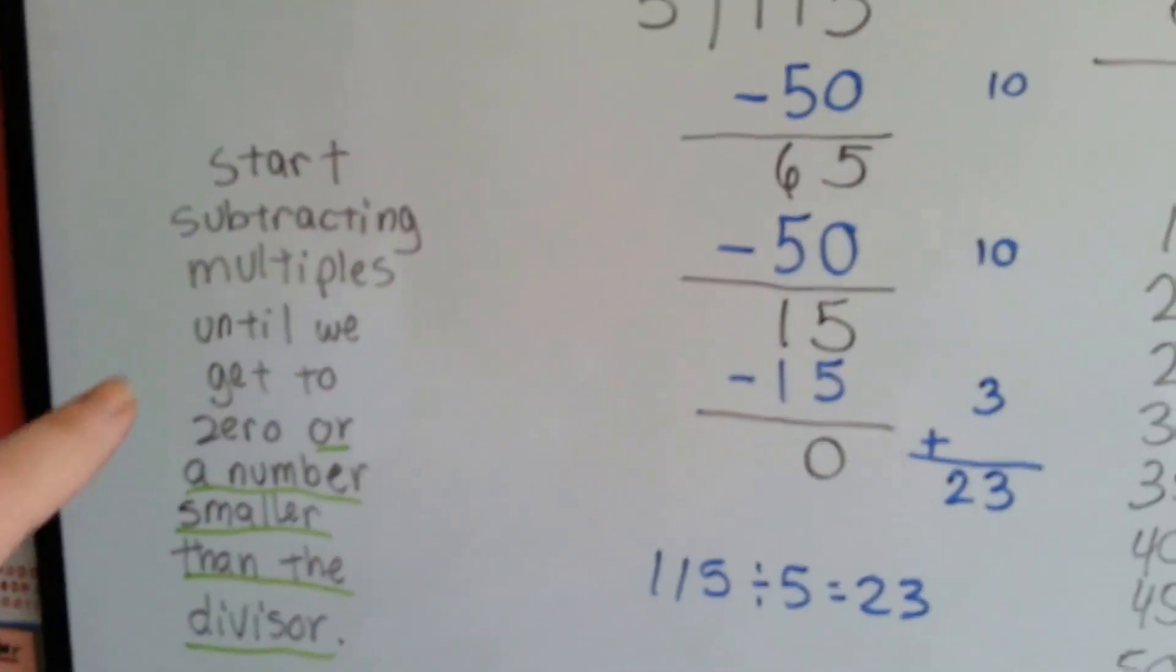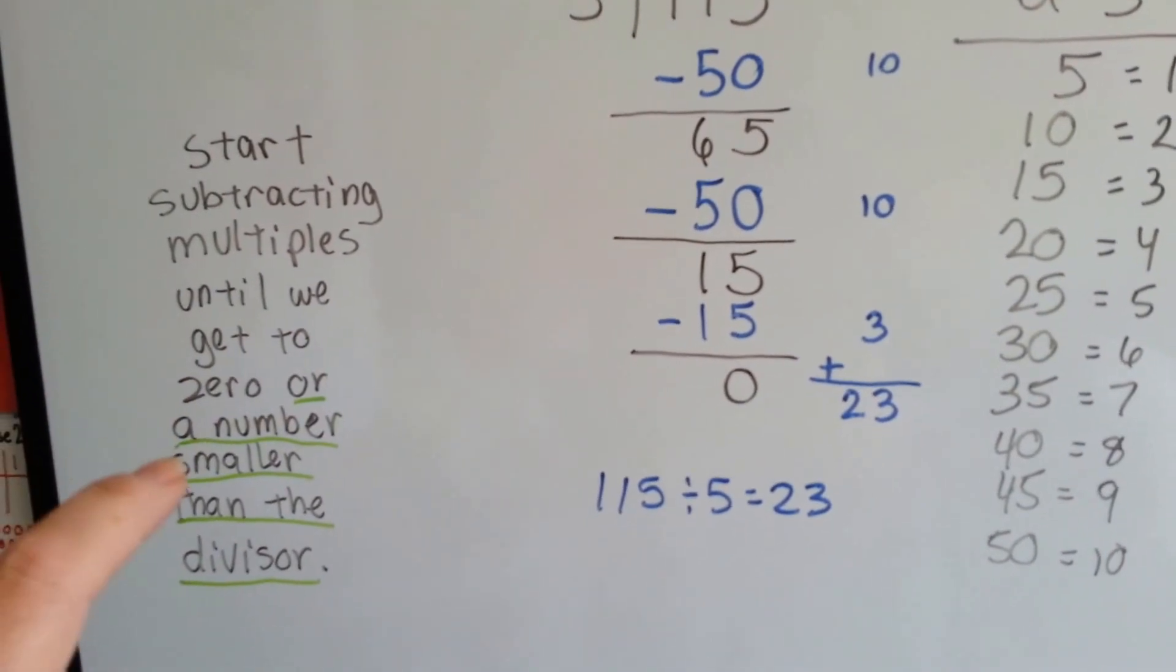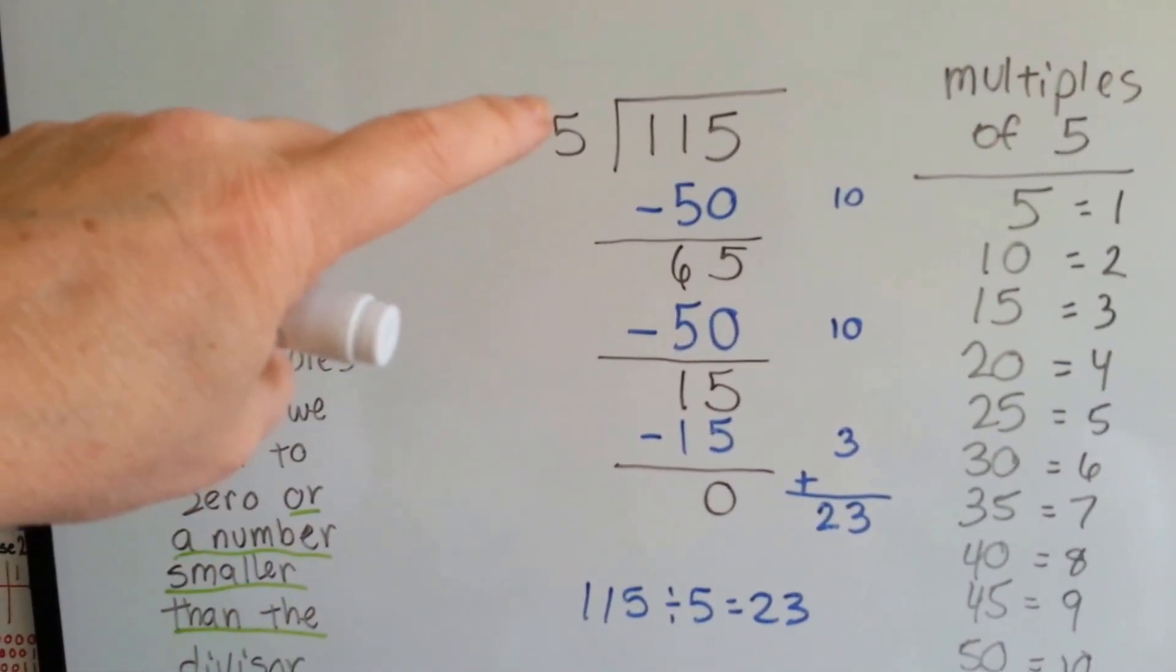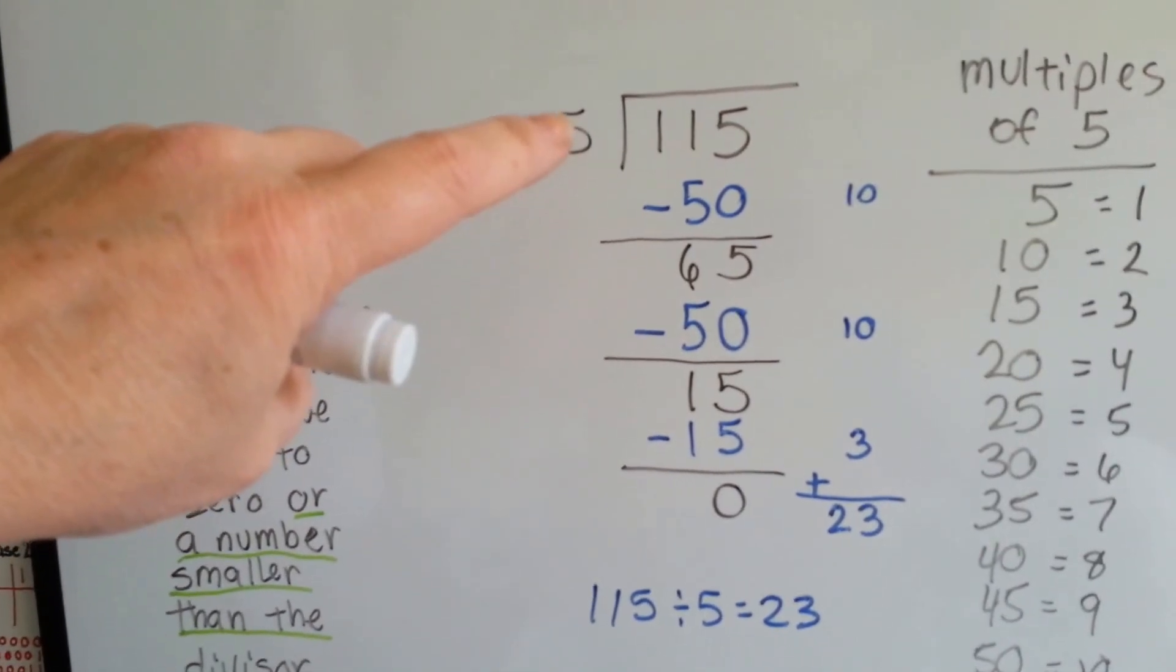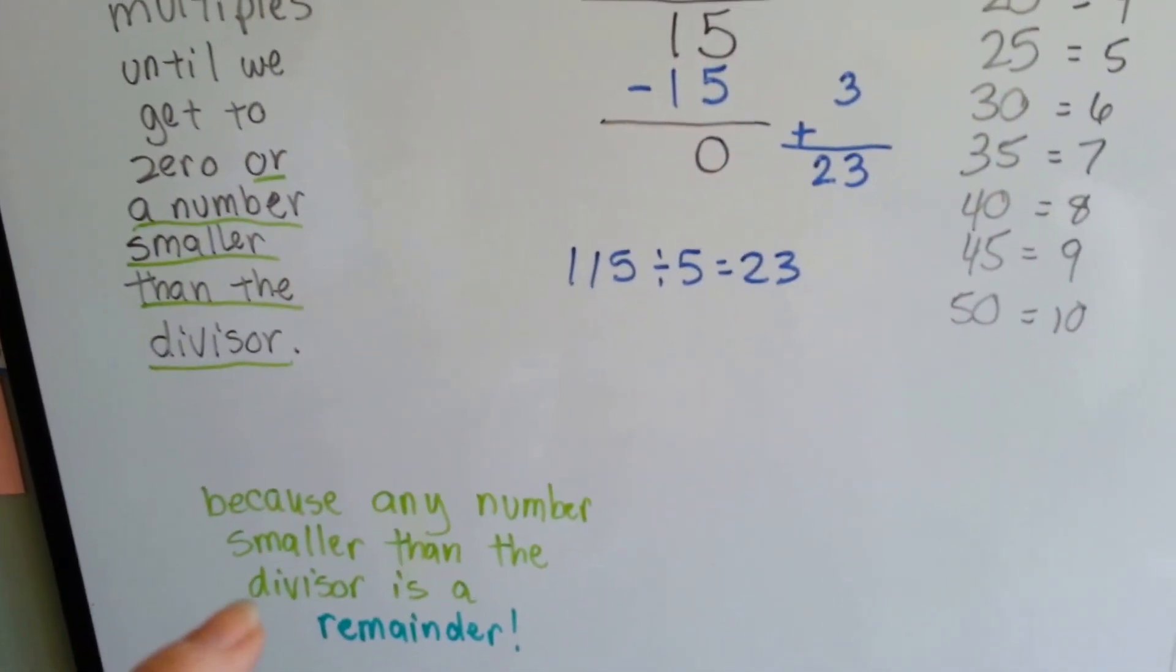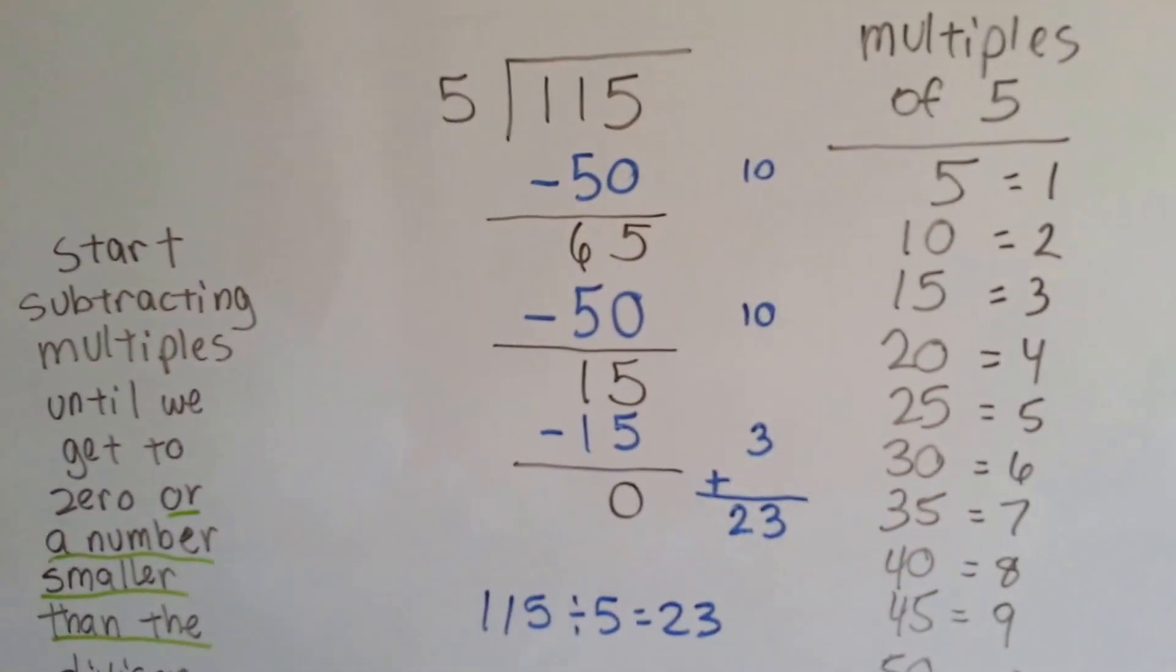We're going to start subtracting the multiples until we get to zero or a number smaller than this divisor. Smaller than 5, we've got to stop, all right? Why? Because any number smaller than the divisor is a remainder.